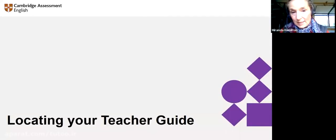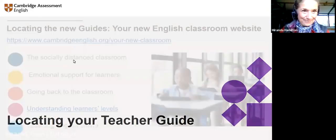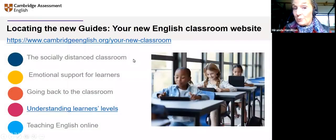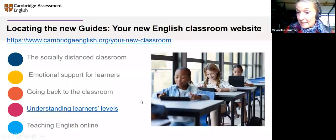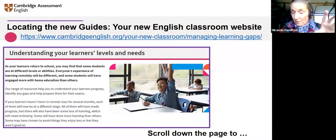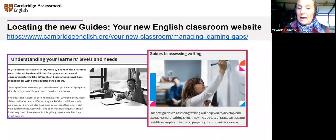One or two of you were asking where you can find these guides — I saved this till last so you would stay with me. They're on the new part of the website. Here is the link — on the 'Your New English Classroom' website you'll see five different levels. The one to go to is 'Understanding Learner's Levels.' When you go into that part of the website, there's an interesting blog on Understanding Levels. Scroll down and you'll find a picture of a little girl writing on the board — 'Guide to Assessing Writing' — and all the guides are there.